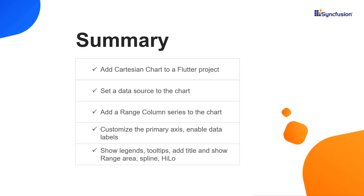That's it. Let me summarize the main points of this video. You saw how to add the Syncfusion Flutter Charts widget to a Flutter project. You learned how to set a data source to the chart and plot the data as a range column series. You also learned how to customize the primary axis, enable data labels, show legends, enable tooltips, and add a title in the range column series chart. Finally, you learned how the other range chart series like range area, spline range area, and high-low work using the same data. You can download this working example from the GitHub link and the documentation link in the video description below. You'll also find a link where you can check if you are eligible for our community license, which gives you a free license key to use our Flutter products.